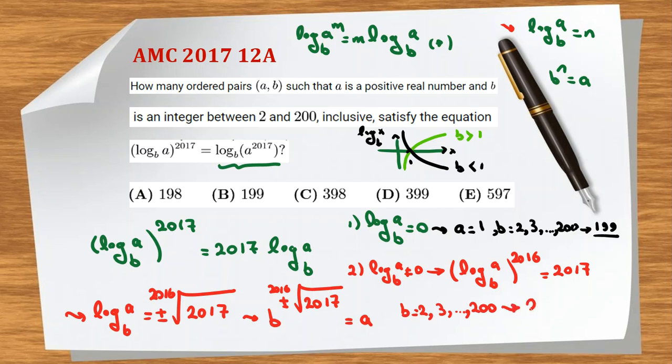For each b from 2 to 200, we have two answers for a. So here we have 2×199. The first part is 199, the second part is 2×199, so the total answer is 3×199.